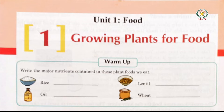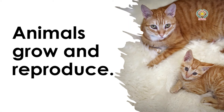Lentils give you a lot of protein and fiber. Rice gives you carbohydrates, oil gives you essential fatty acids, and wheat gives you iron and calcium.